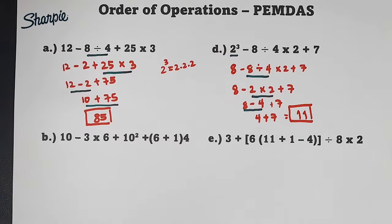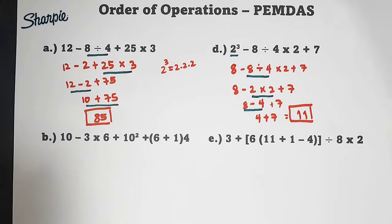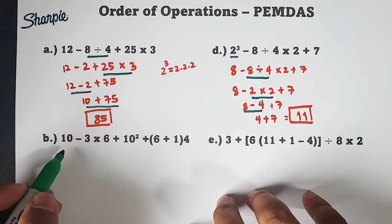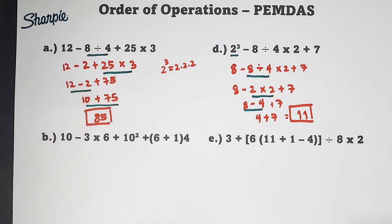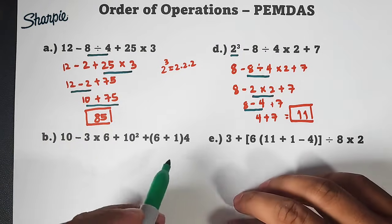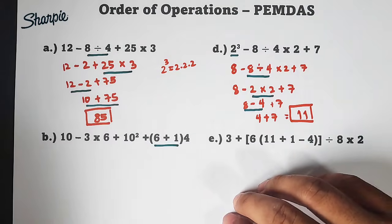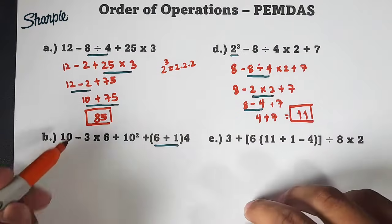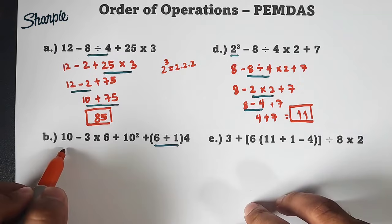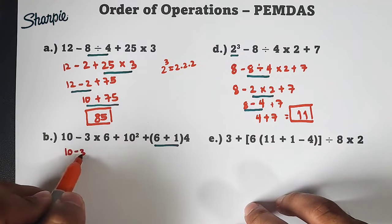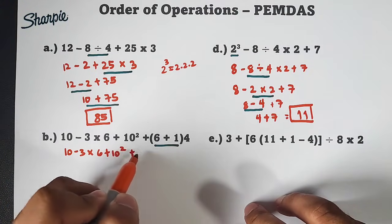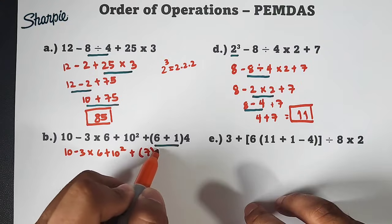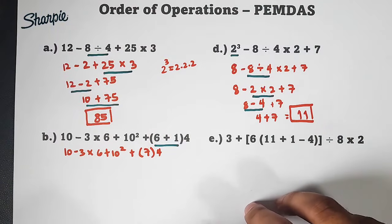Let's go to letter B and letter E. They're a bit harder. So let's have letter B. In letter B, what do we do first? Of course, right? PEMDAS starts with parentheses. So we have this parenthesis. So we will do this one first. Copy this: 10 minus 3 times 6 plus 10 squared plus 7 times 4. Yes sir. What's next?